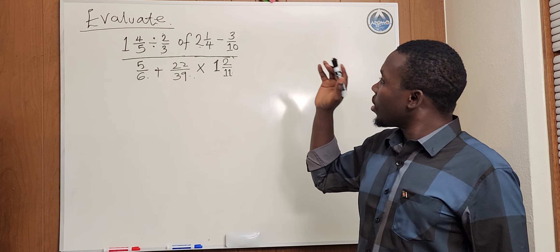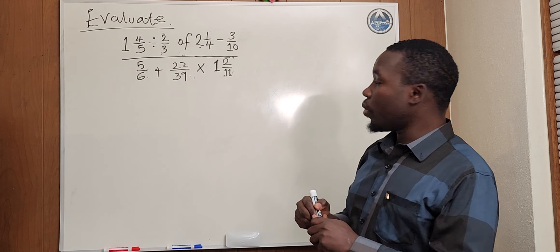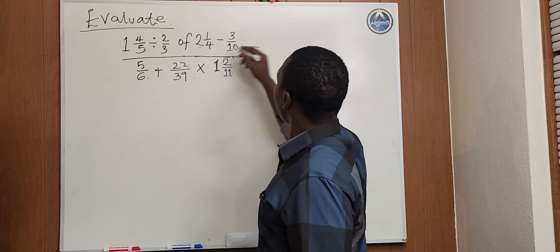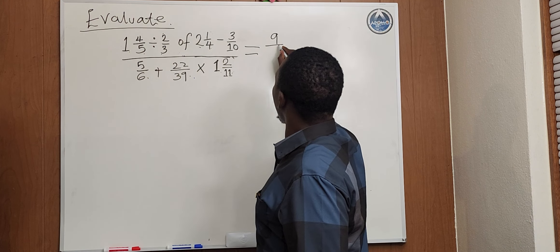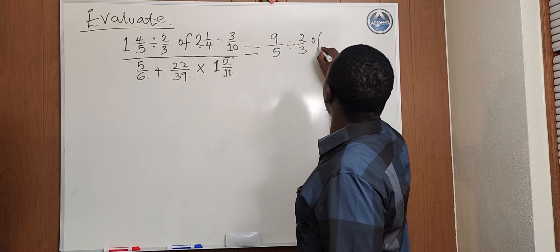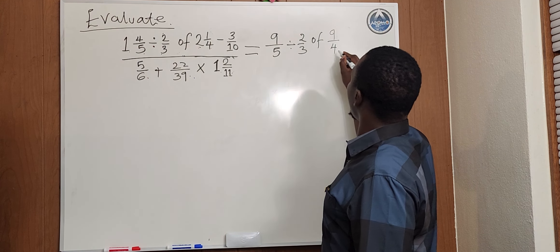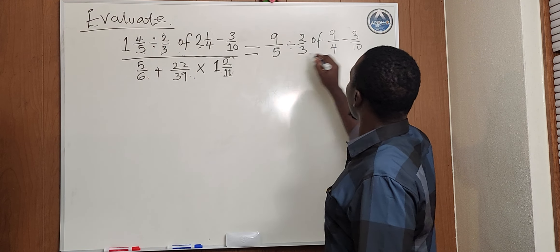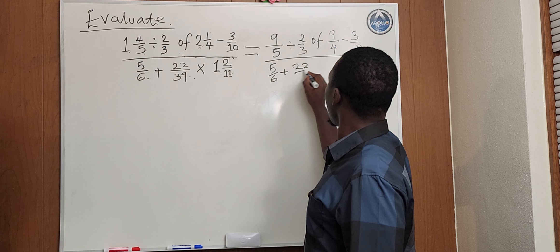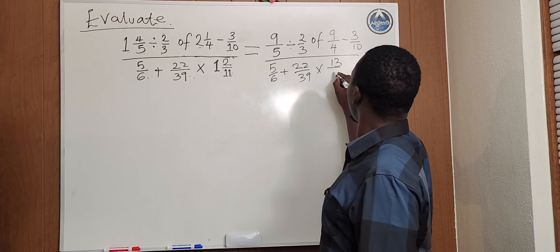So the first thing here we will do with this question, we have to write everything in improper fraction form which will look like this. We'll take 1 times 5 plus 9 plus 4 which will give us 9 over 5, divide by 2 over 3 of 2 times 4 plus 1 will give us 9 over 4 minus 3 over 10. The denominator will be 5 over 6 plus 22 over 39 times 1 times 11 plus 2 will give us 13 over 11.